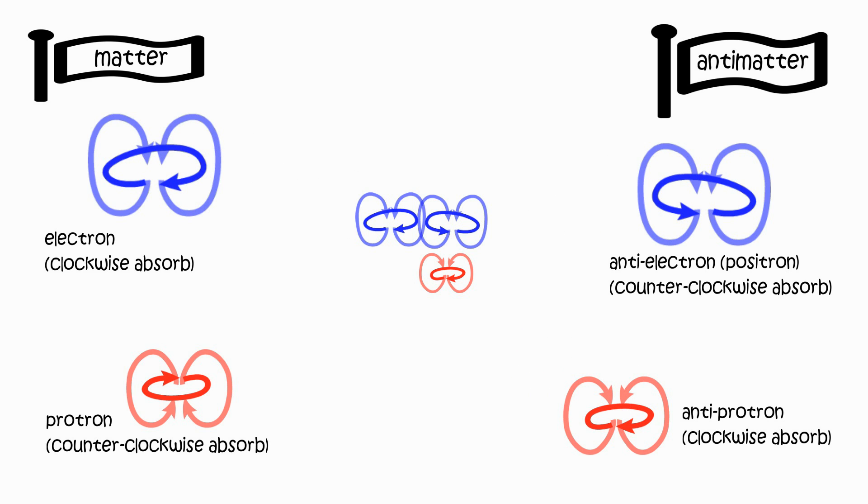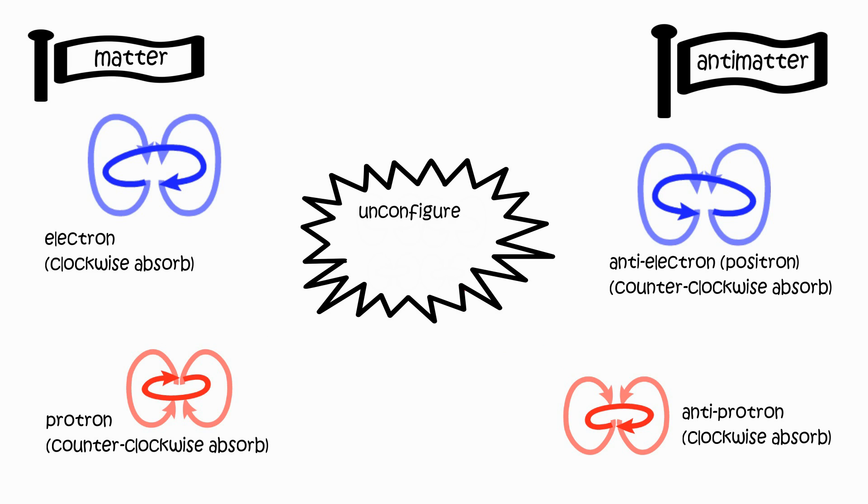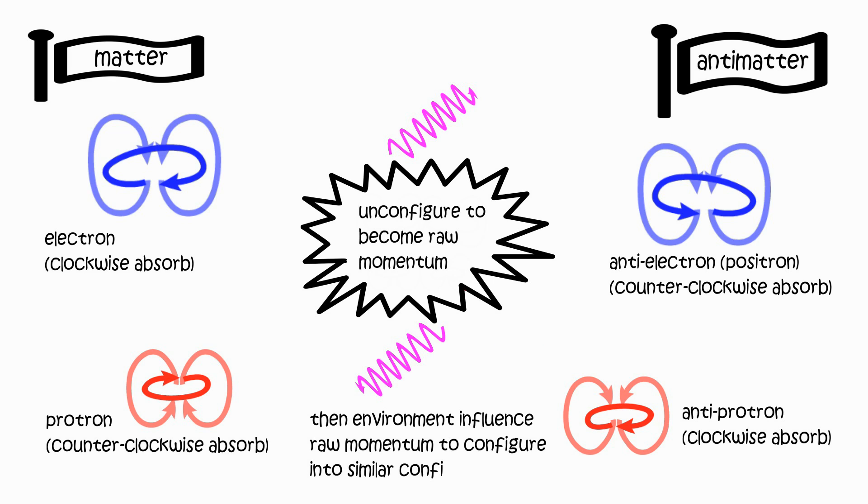As they send out legions to un-configure with oppositions, and the remaining members convince raw field momentum to become similar configurations, the process repeats in stronger magnitude.